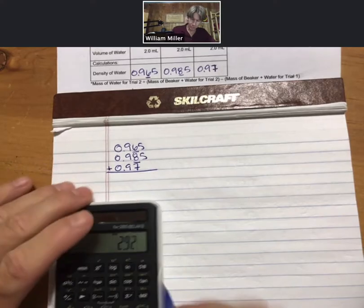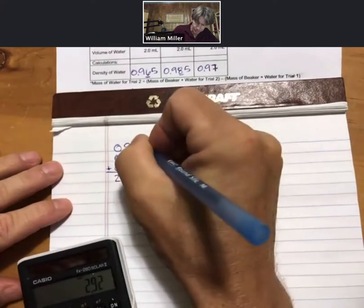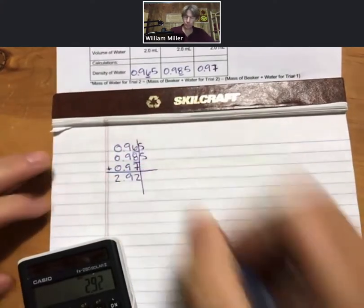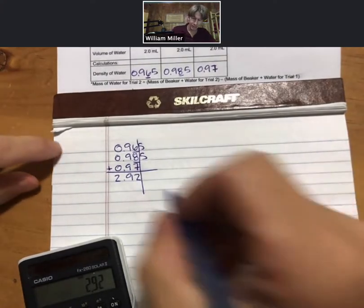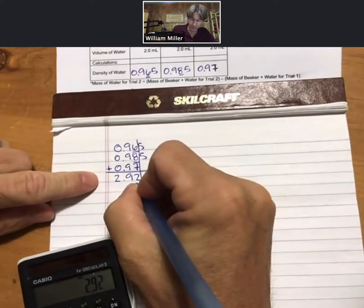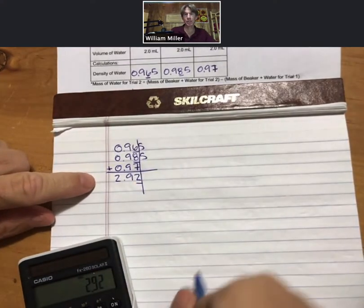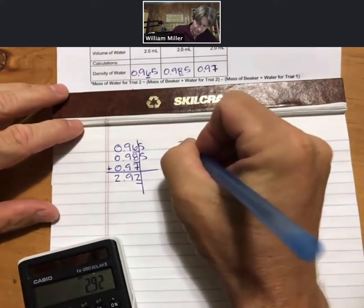I get 2.92, which to the smallest number of decimal places, since that's what you do for addition, is two decimal places. So our number is now 2.92, so all three digits are significant. Then we're going to take 2.92 divided by 3, the number of numbers that we have.